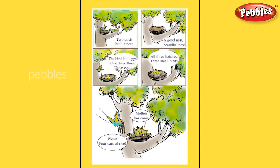How many birds have a nest? One, two, three — three birds have a nest.